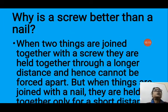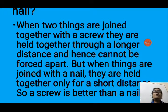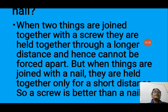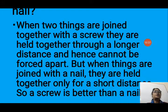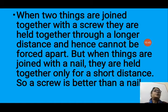Why is a screw better than a nail? When two things are joined with a screw, they are held together over a longer distance and therefore cannot be forced apart easily. But when things are joined with a nail, they are held together only for a short distance. So a screw is always better than a nail.